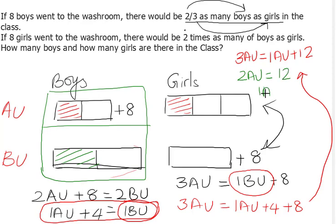I hope it's clear so far. Now the question is about how many boys and how many girls are there in the class. Since I know the value of a unit, I'm going to take this one. For boys, I have two a units—that is six plus six—plus eight, so that is 12 plus 8, which is 20.